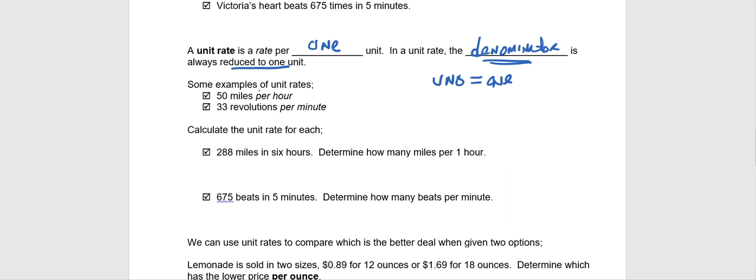So some common examples you might see of unit rates, 55 miles or 50 miles per hour, you might see that as a speed limit sign. Any of you that are familiar with the old style records or vinyl albums, the bigger albums are based on 33 RPMs, otherwise known as 33 revolutions per minute. But notice in each of these, it's per one hour. 50 miles per one hour is 33 revolutions per one minute. That's what makes these now unit rates. We're comparing to one of the denominator units.